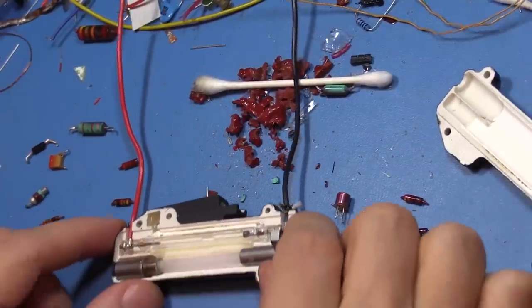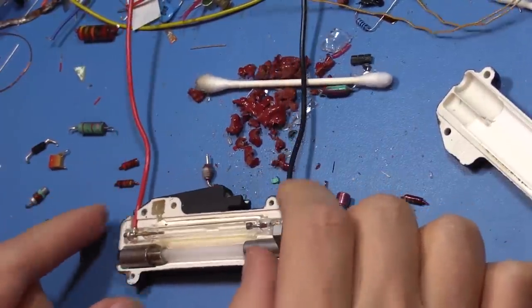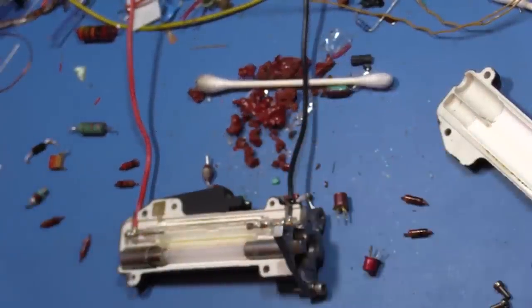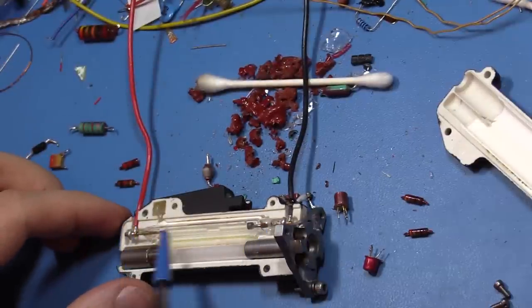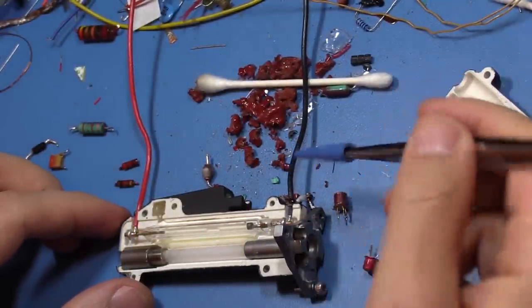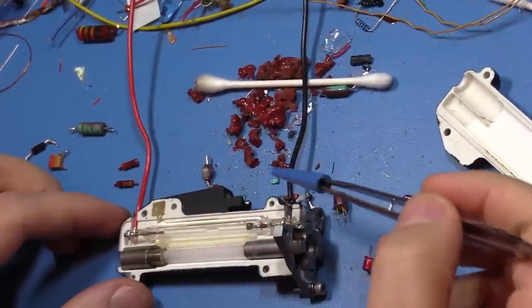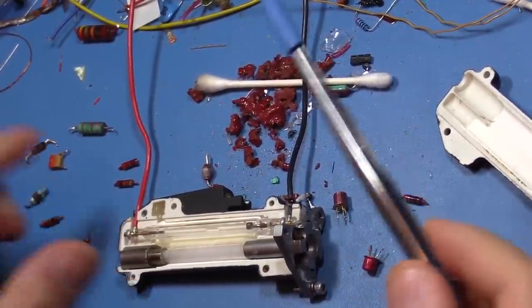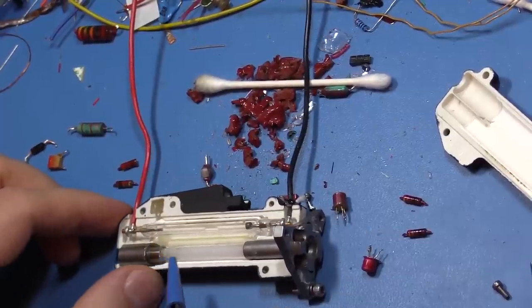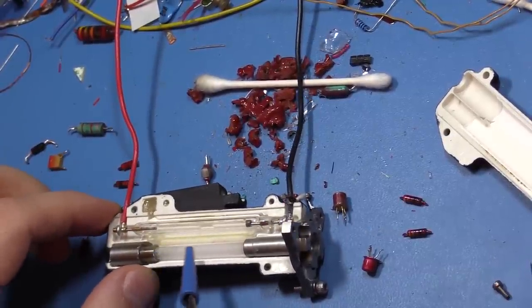On the top section here, this is the flash tube. Negative and positive supply for flash tube. And here's the interesting thing - this is a ruby laser. That's a ruby rod.